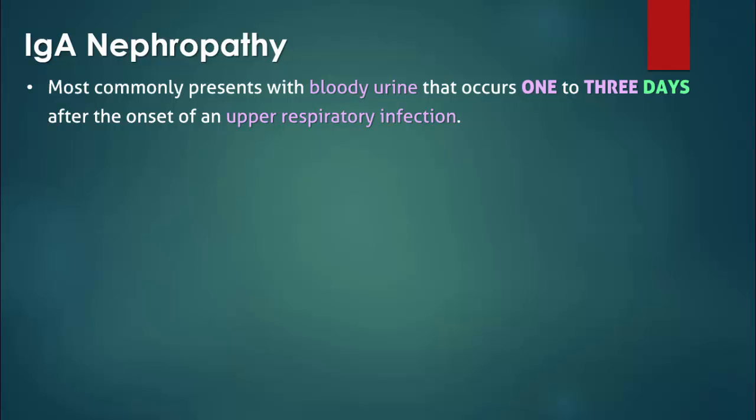It is also important to note that IgA nephropathy occurs just a couple days after the inciting illness. In contrast, post-streptococcal glomerulonephritis usually develops 1-3 weeks after a streptococcal infection.